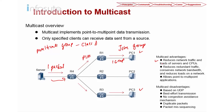Even if I have three users, I still send only one packet, and R4 replicates it to those routers with interested users. This reduces redundant traffic, conserves network bandwidth, and reduces the load on the network. If there are no users interested in the traffic, the traffic will not be sent to those non-users. So that is another advantage.